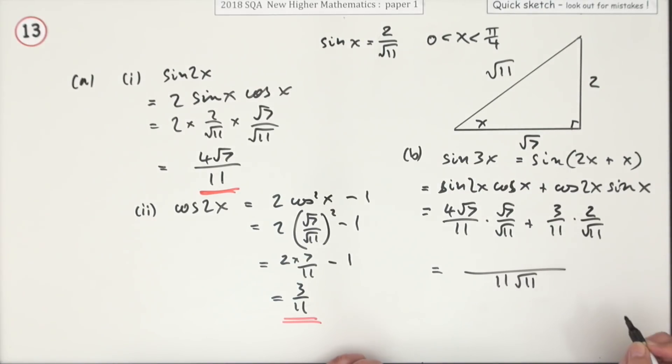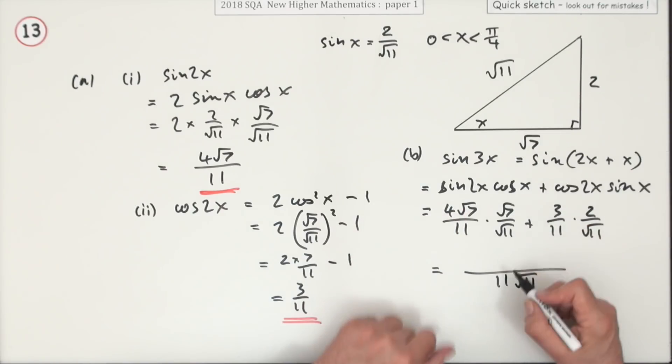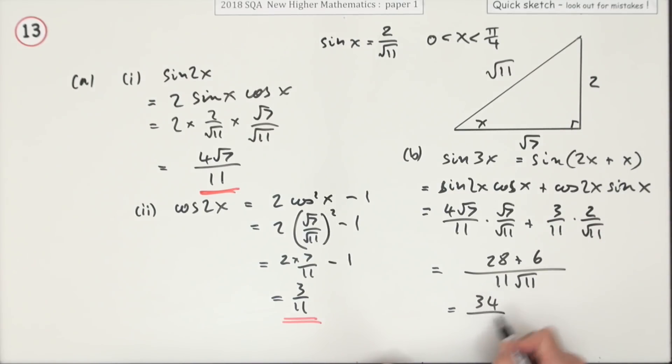Well, they're all over 11 root 11. The first part would be 4, and that reconstitutes the 7—4 times 7, so that'd be 28. 3 times 2, that's 6, so that gives you 34 over 11 root 11.